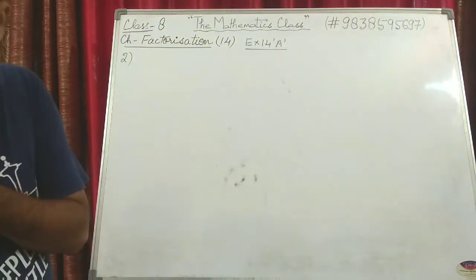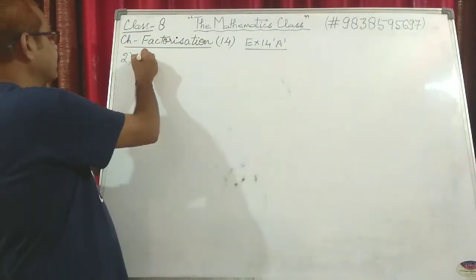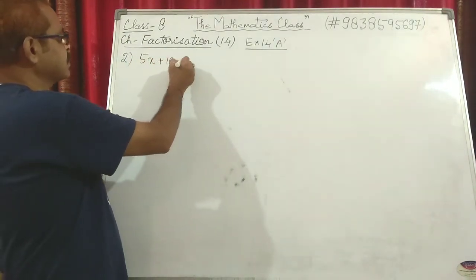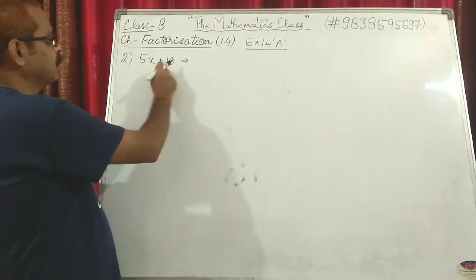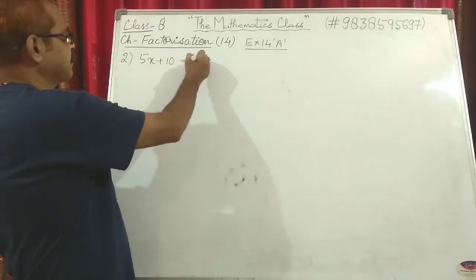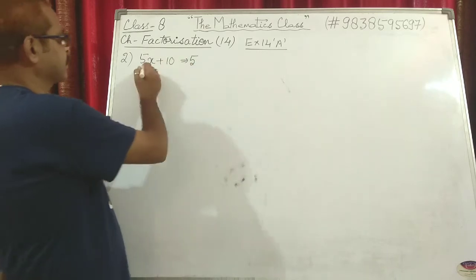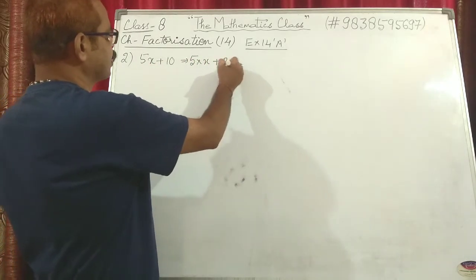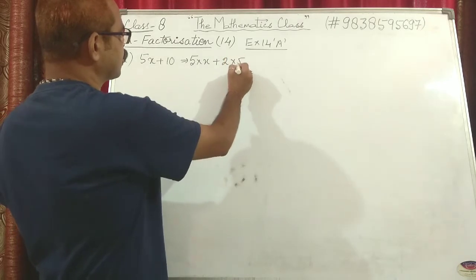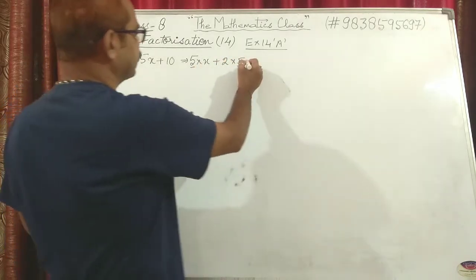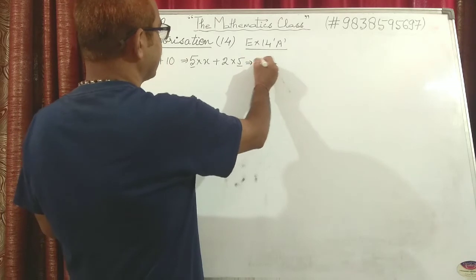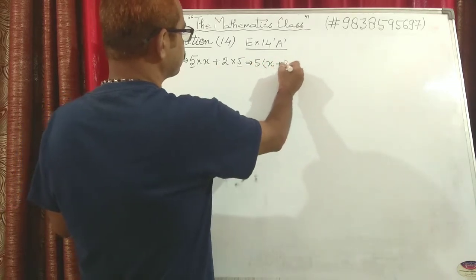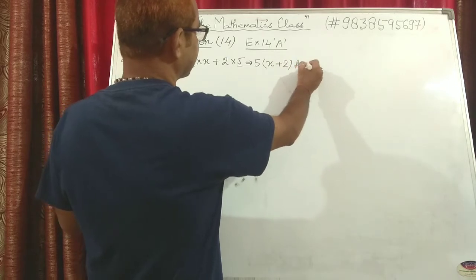Question 2: factorize 5x + 10. You can see what is common — only 5 is common. 5x can be written as 5 into x, and 10 can be written as 2 into 5. So 5 is common, and what is left in the bracket is x + 2. That is the final value.